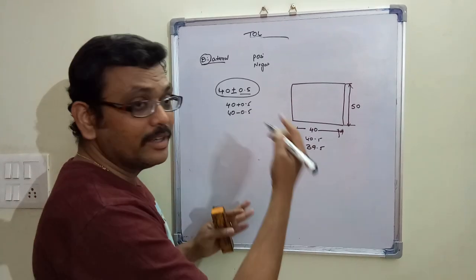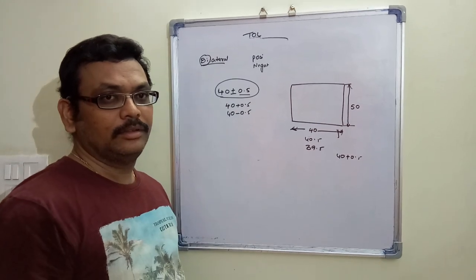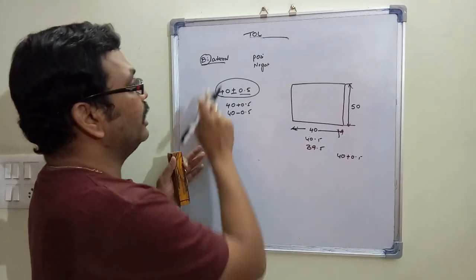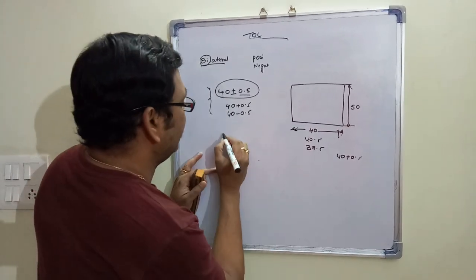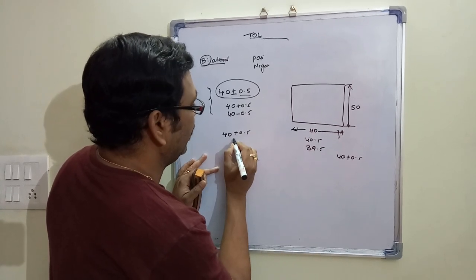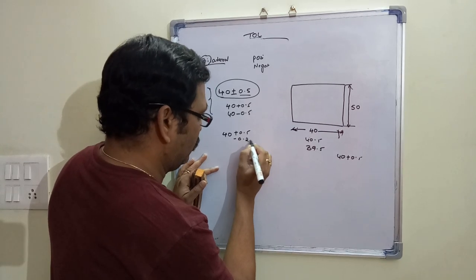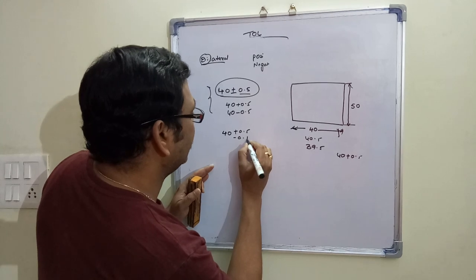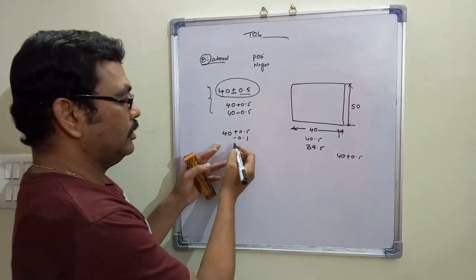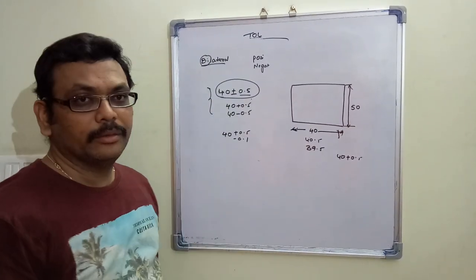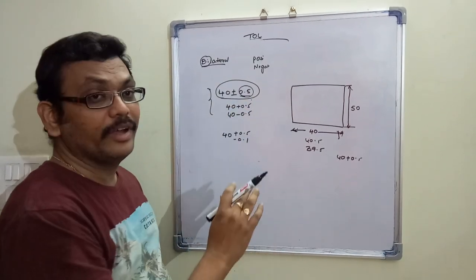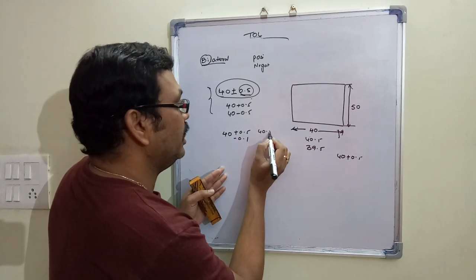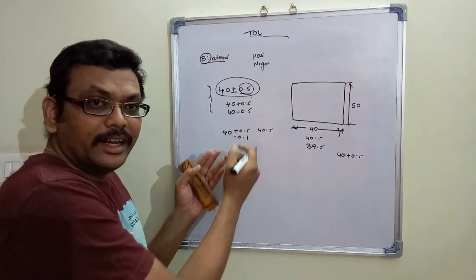In the previous unilateral case we considered only one tolerance direction. Another way to represent bilateral tolerance is asymmetrically, for example 40 +0.5 / −0.1. Here the tolerance is not equal on both sides — the dimension can increase by 0.5 and decrease by only 0.1.